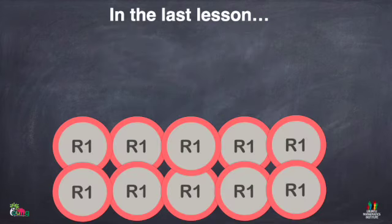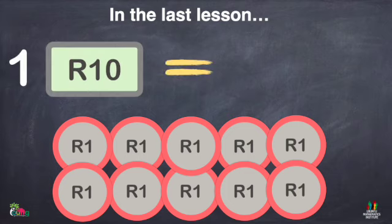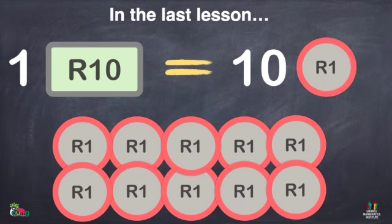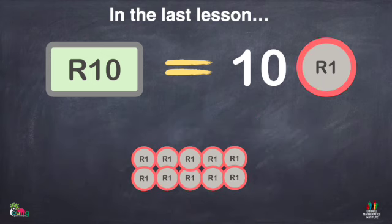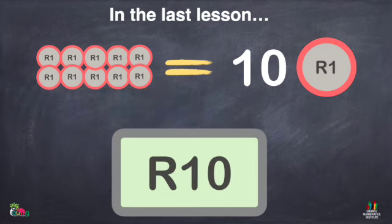But let's recap. In the last lesson, we talked about one 10 rand note being equal to 10 one rand coins. In other words, you would have the same amount if you had one 10 rand note or you had 10 one rand coins.